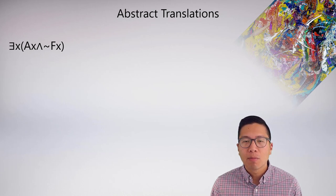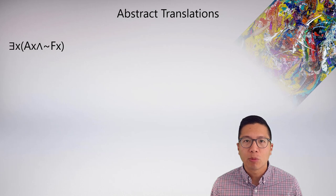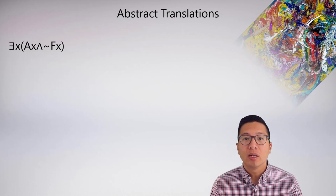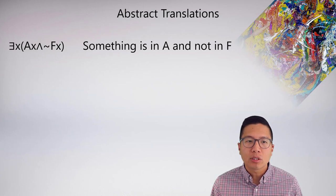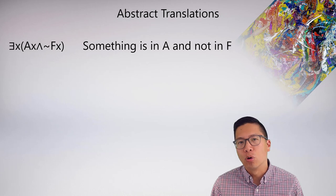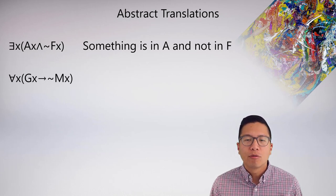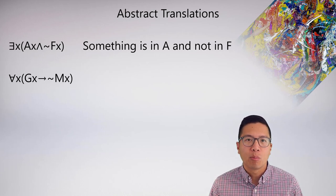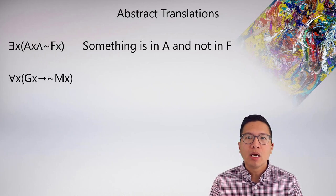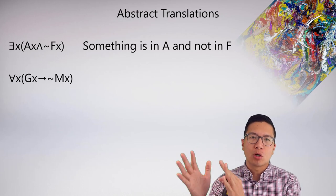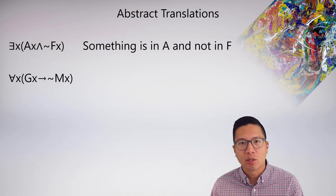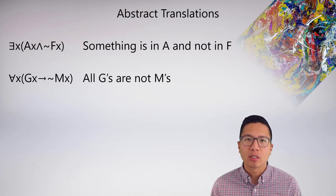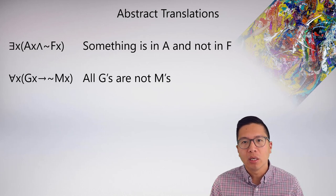For 'there exists x, ax and not fx': we assert the positive relationship we know about a, and the single existential quantifier tells us something about its relationship to f — namely, it's not f. So we say something is an a and not in f. For 'for all x, gx conditional negation mx': the way to phrase a conditional is to say if something is a g, or more casually, all g's have the following property. The group is g and the property is not m, so the abstract translation is: all g's are not m.